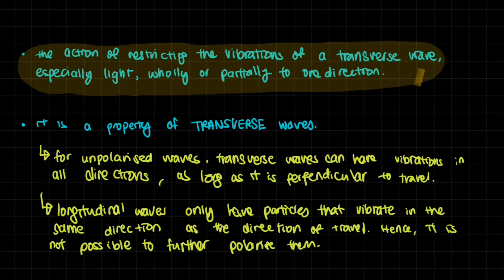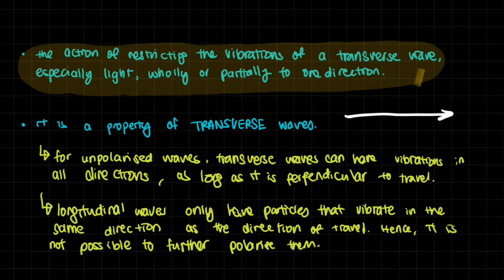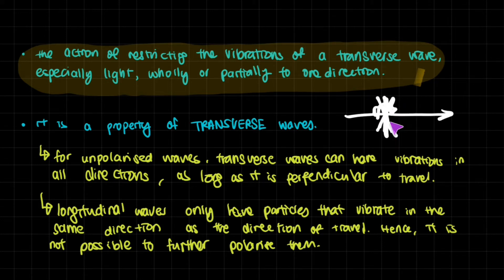We're going to talk about why this has to be something for transverse waves. For unpolarized transverse waves, they can have vibrations in all directions as long as it is perpendicular to the direction of travel. Transverse waves have particles that vibrate perpendicular to the direction of travel. So if the wave was traveling in one direction, the wave's particles could vibrate up and down, or it could also vibrate towards us — front and back — or maybe at an angle, as long as it is 90 degrees to the direction of travel.